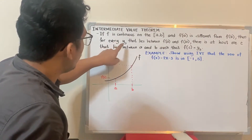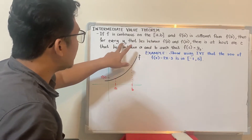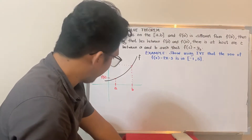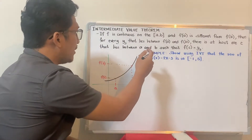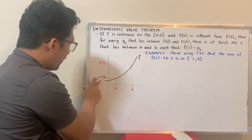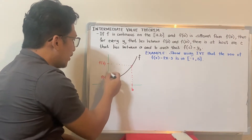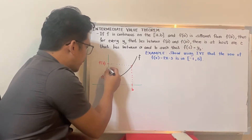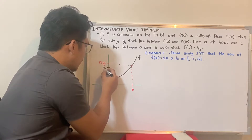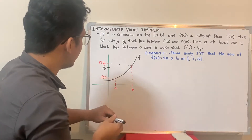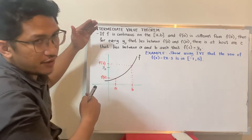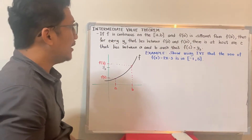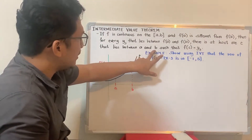Then, for every y-sub-3 that lies between f(a) and f(b) — so we pick any value in between f(a) and f(b) — it doesn't matter if it's closer to f(b) or f(a). There is at least one c that lies between a and b.